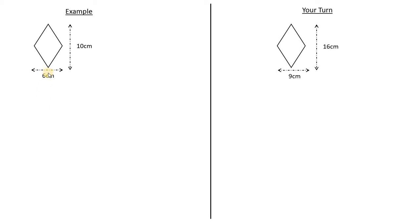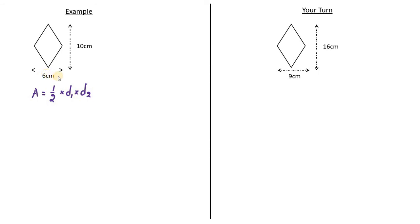Area of a kite. The area of the kite is given by the formula a half times d1 times d2. d1 and d2 are the two diagonals of the kite. In this case, 6 is d1, and 10 is d2.